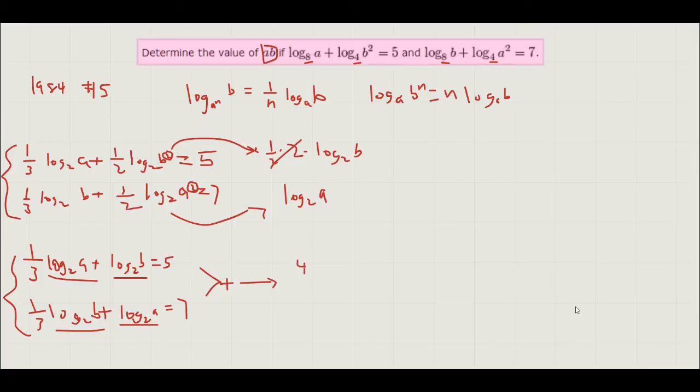Then we get 4 thirds times the quantity log base 2 of a plus log base 2 of b equals 12.